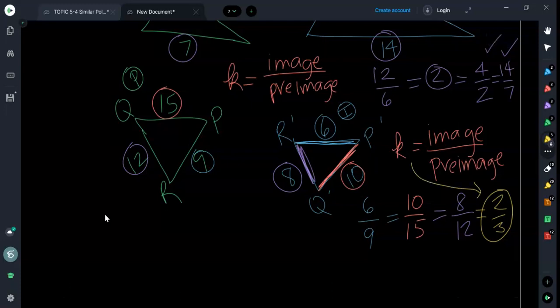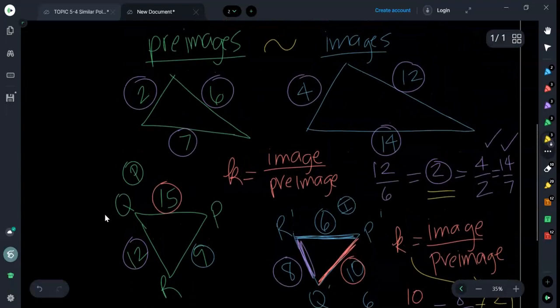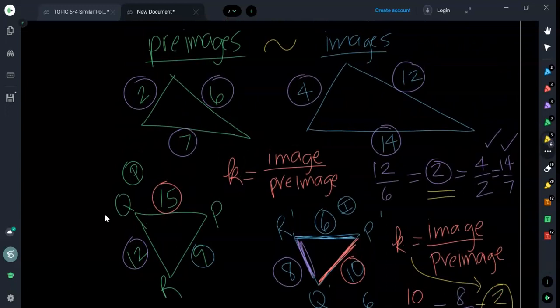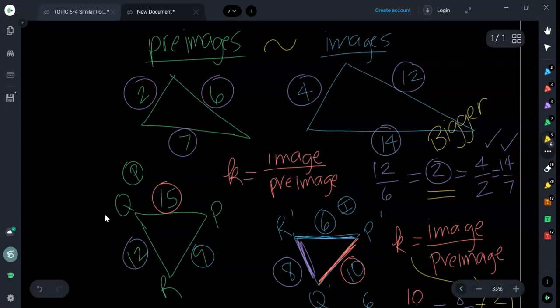Two-thirds is actually your scale factor. Notice the difference in scale factors. In my first one, what was the scale factor? It was 2. And if you look back up here, what happened? We got bigger. When the image is bigger than the pre-image, your scale factor is going to be greater than one. When the image is getting bigger, K will be larger than one, because if we want to make something bigger, we're going to multiply it by something bigger than one.